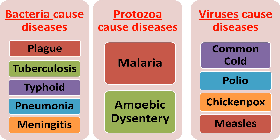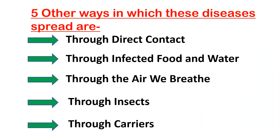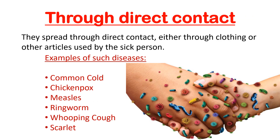There are a few other ways in which these diseases spread: through direct contact, through infected food and water, through the air we breathe, through insects, and through carriers.